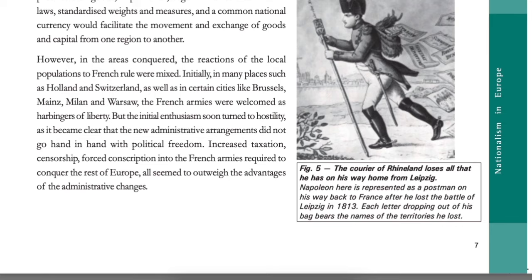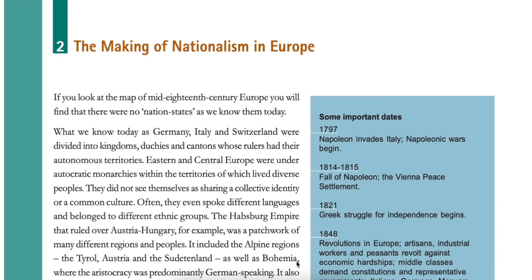However, in the areas conquered, the reactions of local populations to French rule were mixed. Initially, in many places such as Holland and Switzerland, as well as in certain cities like Brussels, Mainz, Milan and Warsaw, the French armies were welcomed as harbingers of liberty. But the initial enthusiasm soon turned into hostility, as it became clear that the new administrative arrangements did not go hand-in-hand with political freedom. Increased taxation, censorship, and forced conscription into the French armies required to conquer the rest of Europe all seemed to outweigh the advantages of administrative changes.